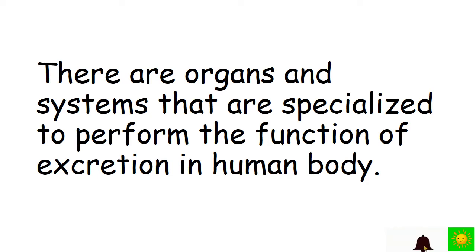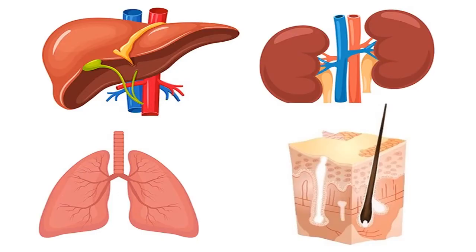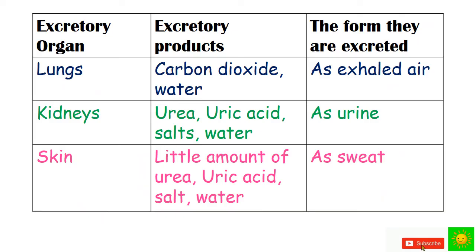There are organs and systems specialized to perform the function of excretion in the human body. The excretory organs are the lungs, kidneys, and skin. In a tabulated summary: the lungs excrete carbon dioxide and water as exhaled air; the kidneys excrete urea, uric acid, salt, and water as urine; and the skin excretes a small amount of urea, uric acid, salt, and water as sweat.